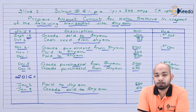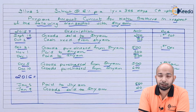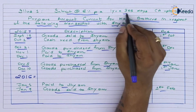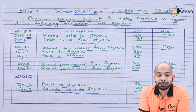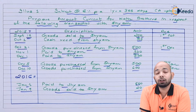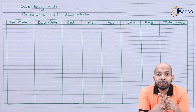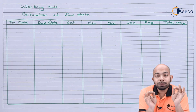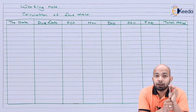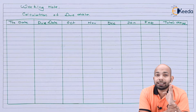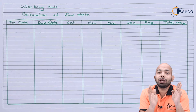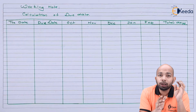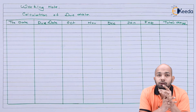We have to calculate interest at the rate of 6% per annum, with one year equal to 365 days as additional information, and the account current is to be prepared up to 1st February. The working note has the calculation of due days first. Transactions start from October and the account is prepared until February, so the five months — October, November, December, January, and February — are all included.